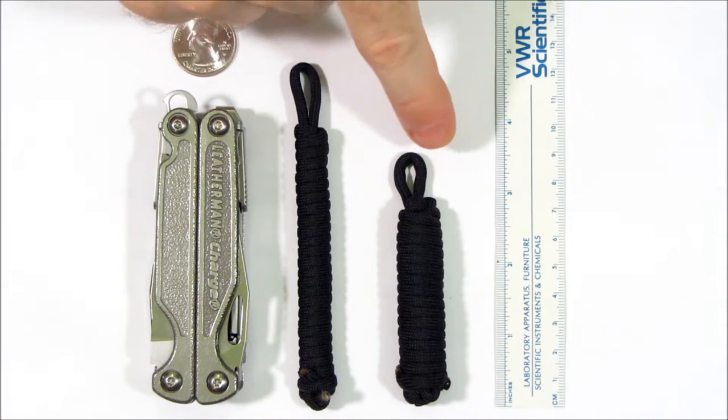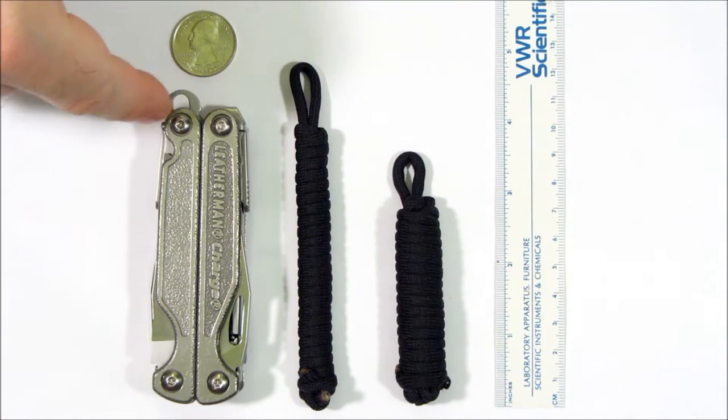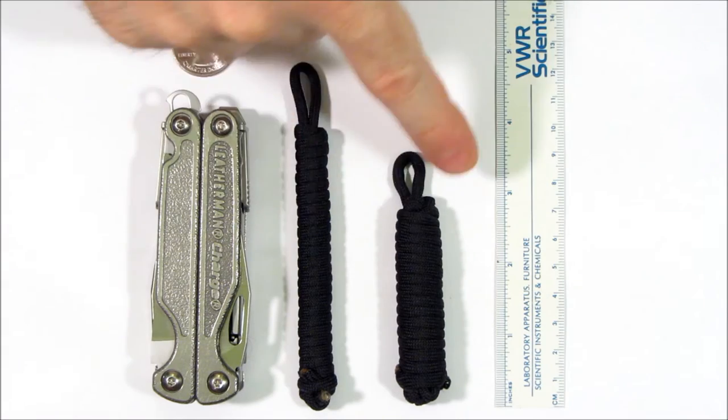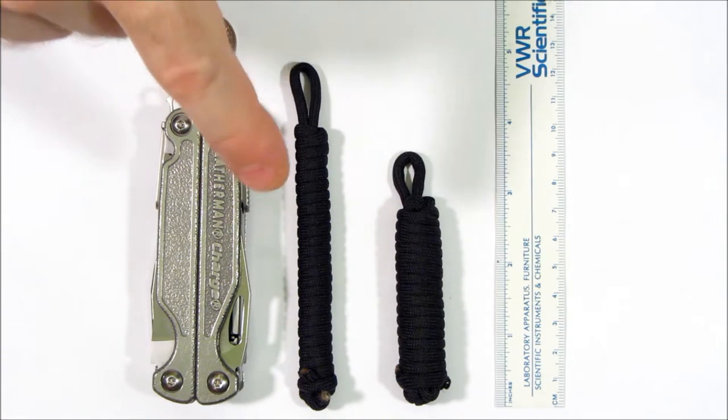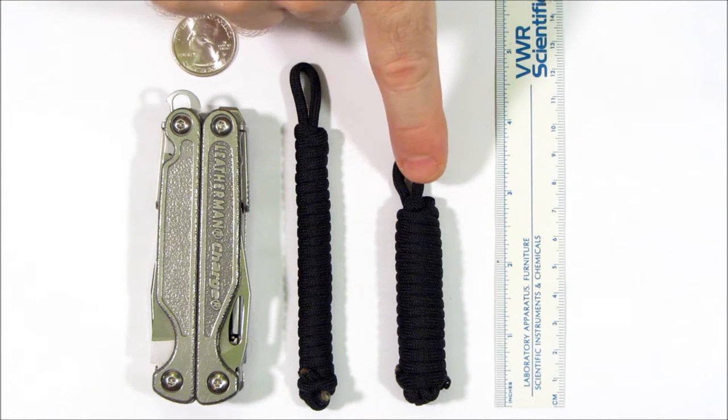These are the same length paracord. One might be better for a key fob, the other might be better for a lanyard. They're the same length of cord internally. The difference is this has one figure-eight loop in its construction, and this has four.